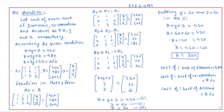Then find the cost of each book. Let's assume: let the cost of each book of economics, cooperation, and account be Rs. X, Y, and Z respectively.